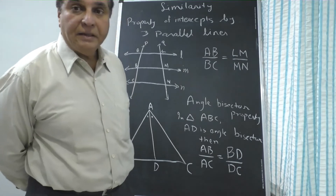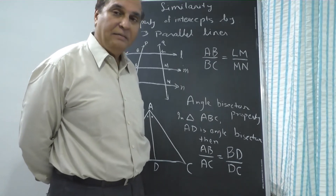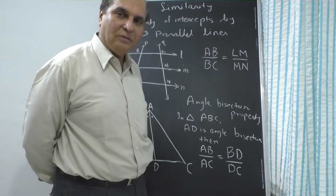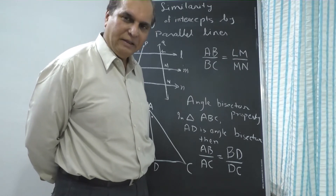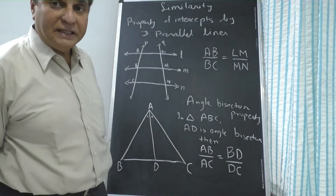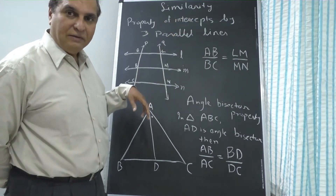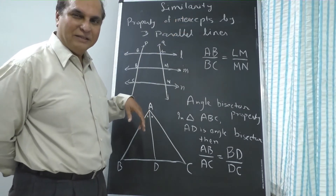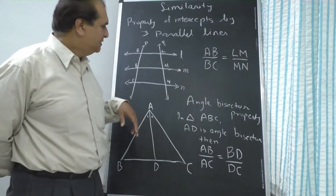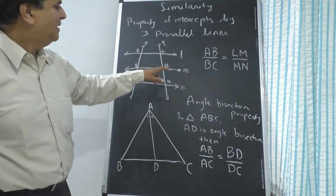Now more basics of similarity based on BPT. The proofs are based on BPT. There is a property of intercepts made by three parallel lines — this is one of the important small concepts. Numericals come on this, and in some proofs you also require this. These are three parallel lines L, M, and N.